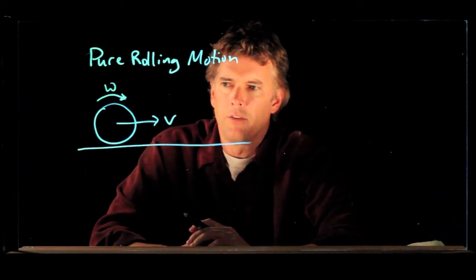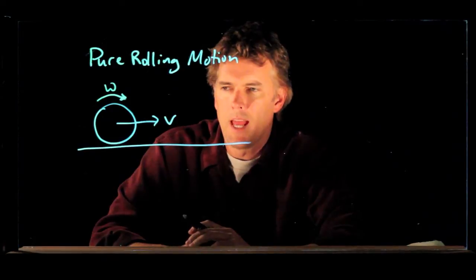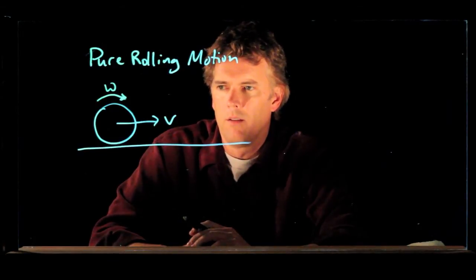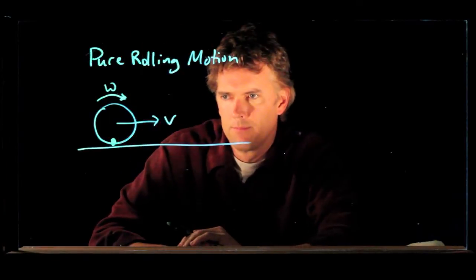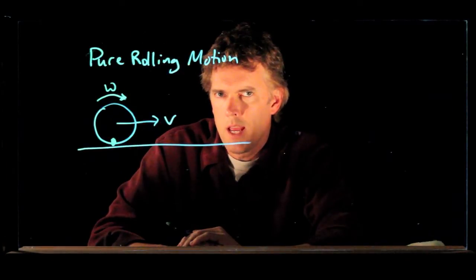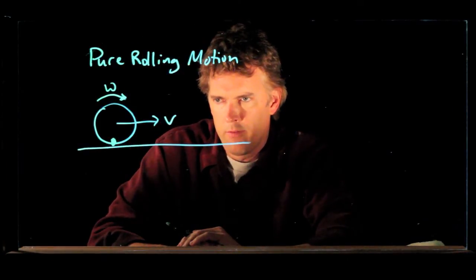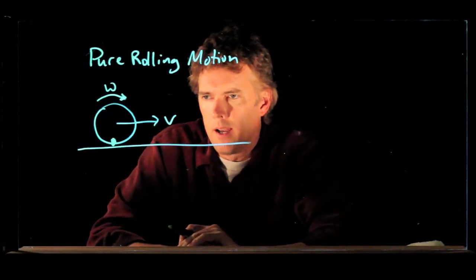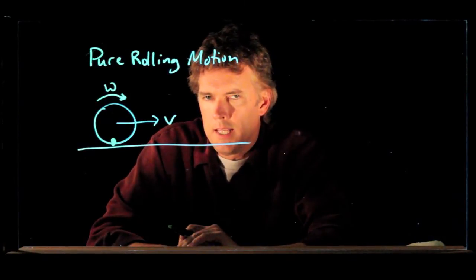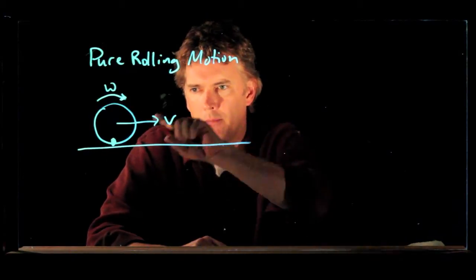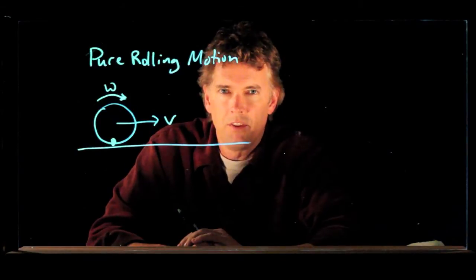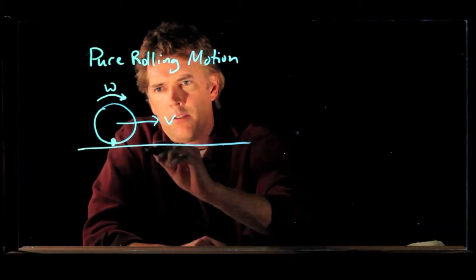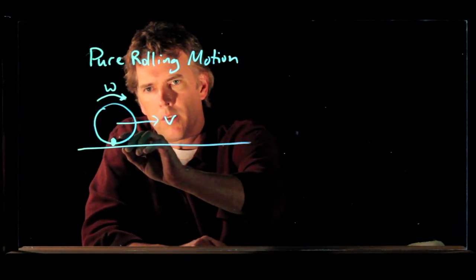Now there's an interesting thing that happens if you take an LED and you put it right on the wheel. If you take a photograph of a wheel rolling by with the LED on the edge, so you get a time lapse picture, a long exposure picture, what do you see? Well it turns out you see something that looks like this.